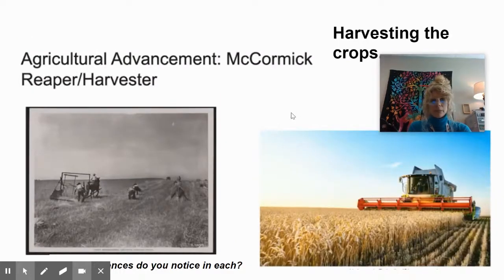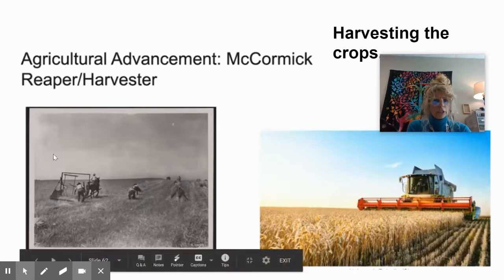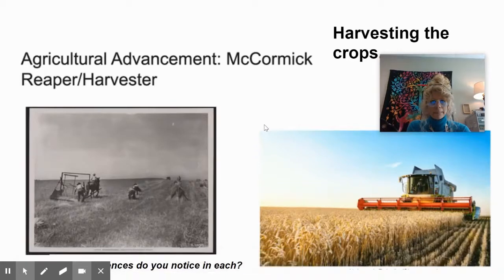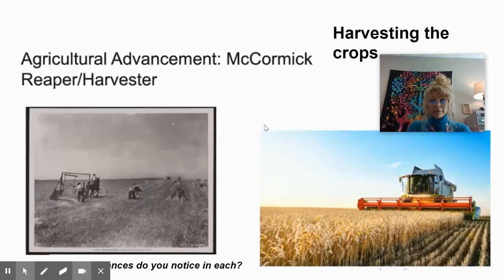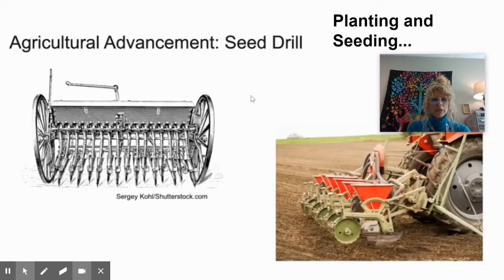The second one is the reaper — also called the harvester — and its purpose is to harvest the crops. The effect from the harvester is that it increased harvest, again reduced human labor, and reduced crops that perished in the field before the harvest.